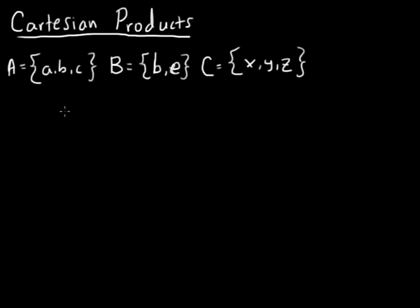Okay, basically what a Cartesian product is, it's basically the cross product of two sets or I guess two or more sets, and you represent the products in ordered pairs.